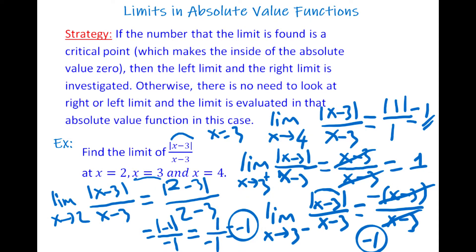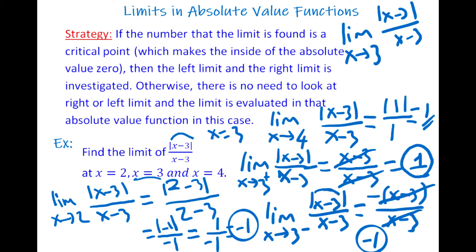When x goes to 3 from the right, we have 1. When x goes to 3 from the left, we have −1. Because the left limit is not equal to the right limit, the limit when x goes to 3 does not exist.